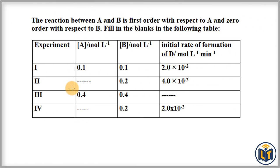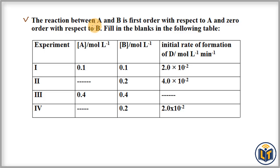Hello students. In this video I will discuss how to calculate the rate constant by using the rate law expression from experimental data, and I will show you how to calculate the unknown concentration value of reactants in a chemical reaction using the rate law expression. This is a problem given here: the reaction between reactant A and reactant B is first order with respect to A and zero order with respect to B. Fill in the blanks in the following table — some experimental data values are given and we have to find the missing values.